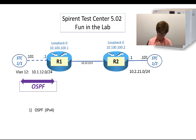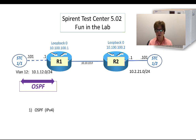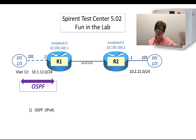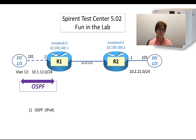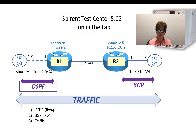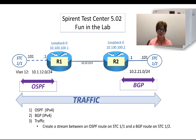In the OSPF videos we had VLAN 11 and VLAN 12 - two different ways of configuring and starting up OSPF. We're only going to use VLAN 12 in this one, so we have the OSPF IPv4. All of this would still work for IPv6 as well by the way. And then we have the BGP up and running, and now we're going to do the traffic.